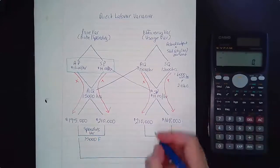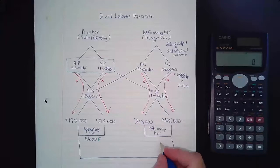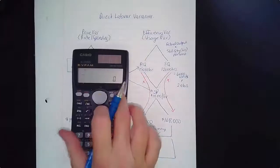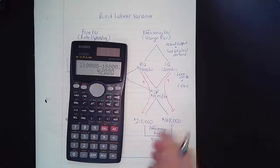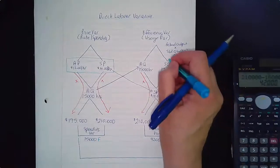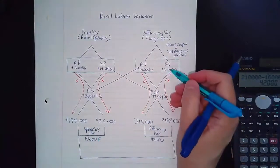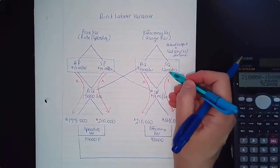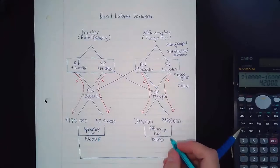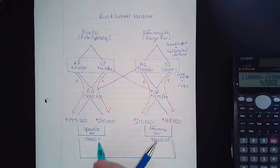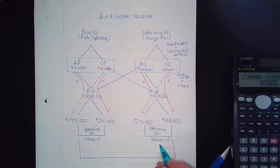Now for the efficiency variance — which we could have called the usage variance: $210,000 minus $168,000 equals $42,000. Is this good or bad? We look at the center of the diamond: we should have taken 12,000 hours to finish the job, but we took 15,000 hours. We took longer than we should have, so this is an unfavorable variance. To summarize: favorable spending variance of $15,000, and unfavorable efficiency variance of $42,000.